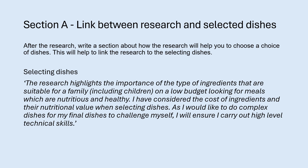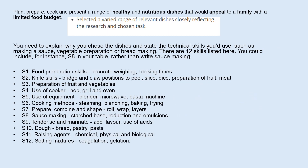This is just an example. There are 12 technical skills — S1 to S12 — that you can include when writing up your coursework, and a link to these will be provided below. For example, S1 relates to food preparation skills, accurate weighing and cooking times.